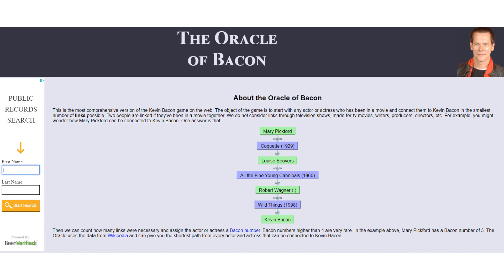The same high clustering pattern was also seen in the collaboration network of Hollywood actors. Like the Erdős number in the scientific community, there is a Bacon number in Hollywood. The Kevin Bacon game was invented in 1994. If you acted in a movie with Kevin Bacon, you have a Bacon number of 1. In a network of over 200,000 actors in the Internet Movie Database, most of them have a small Bacon number, smaller than 4.